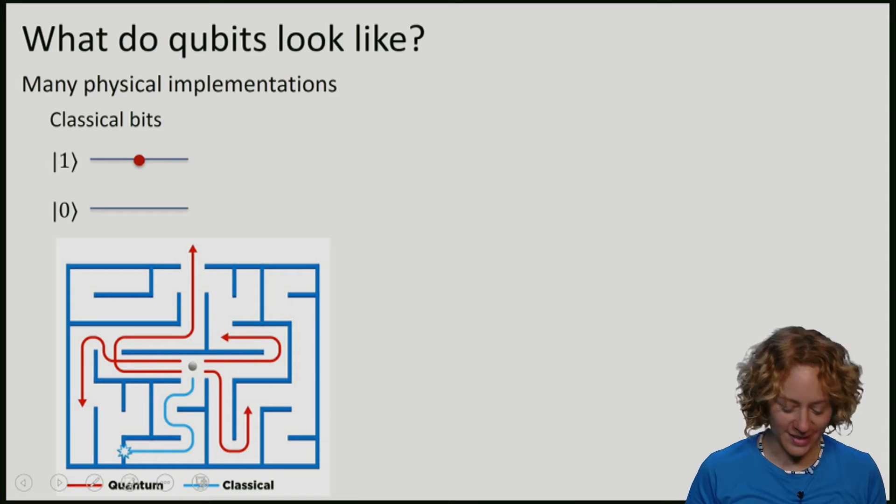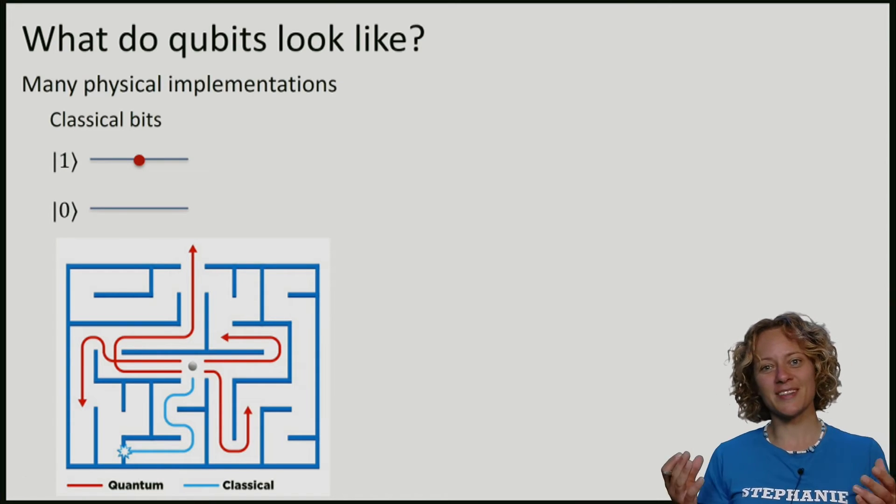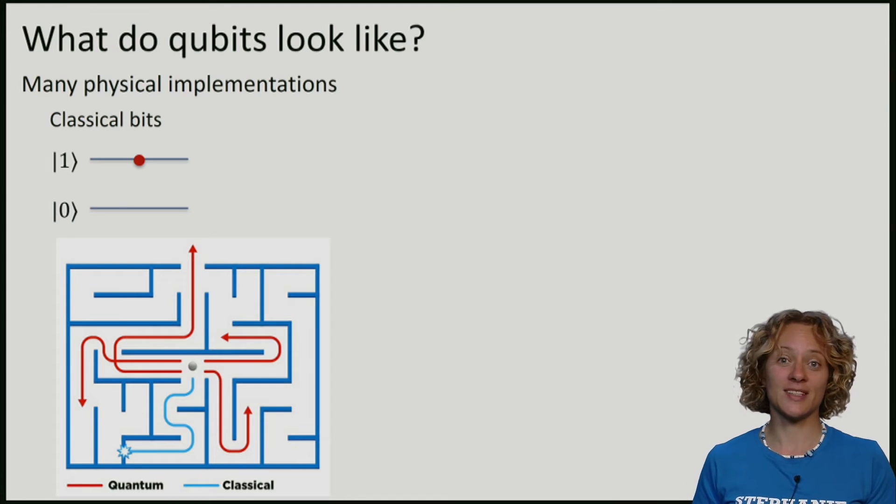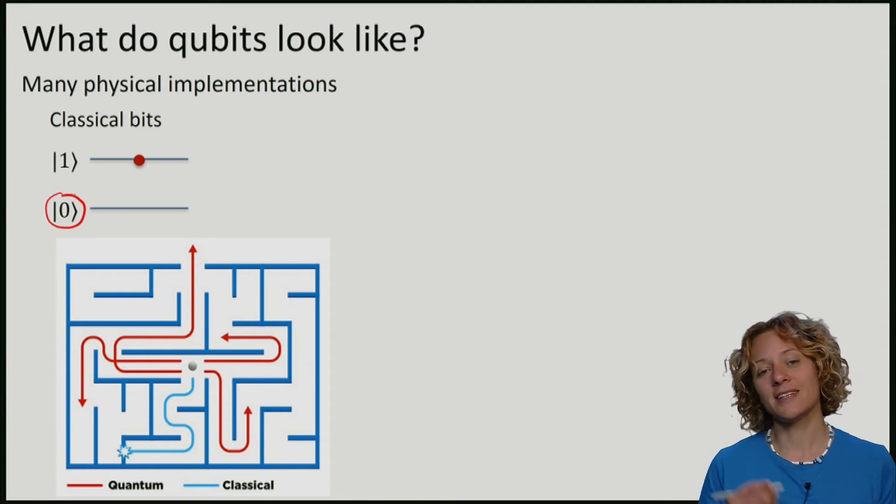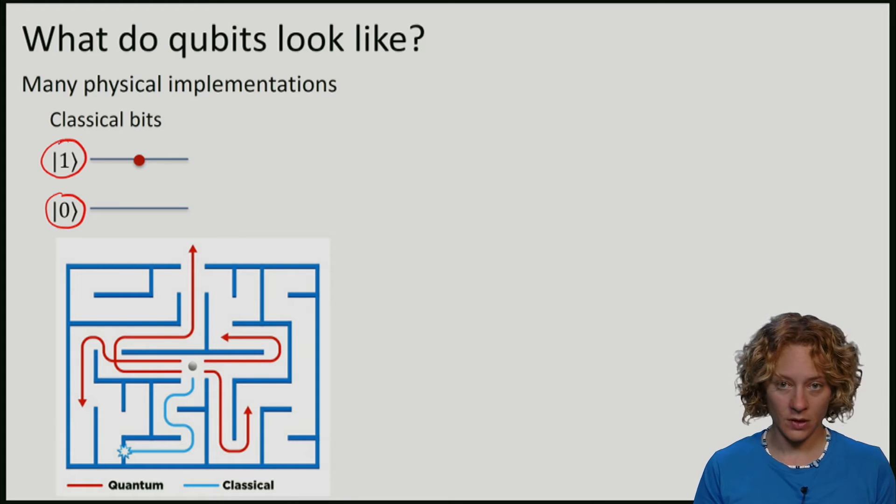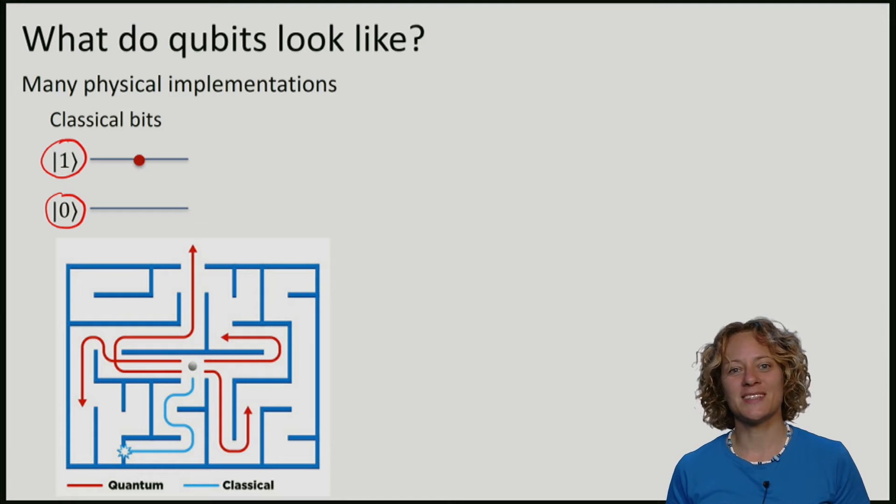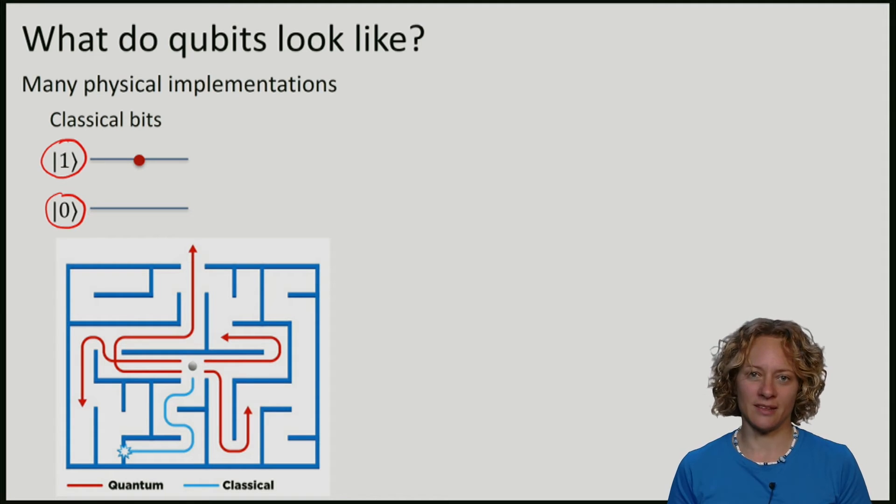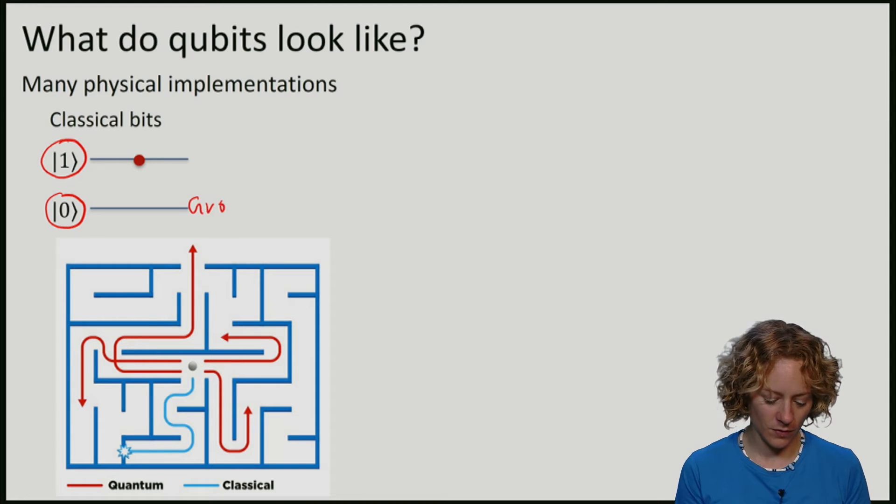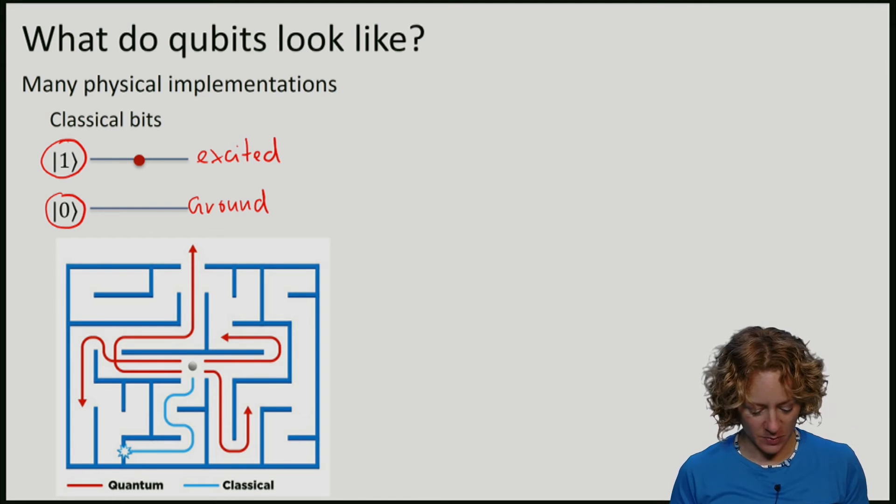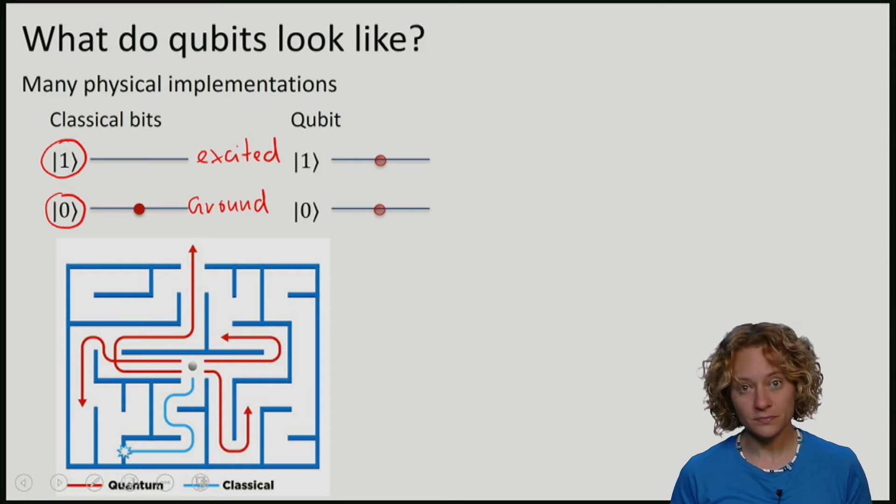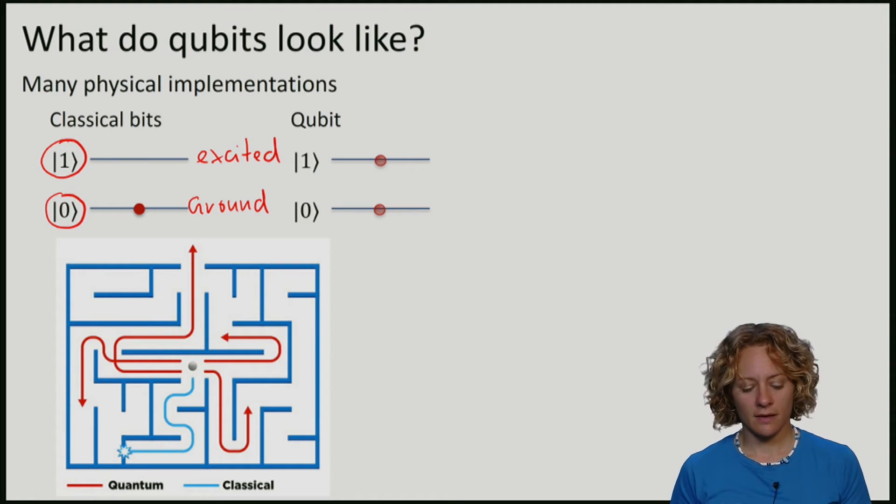Another example is a physical implementation in which we represent bits by energy levels in an atom. We can say that the ground state, or the lower one, is called zero and the higher one is called one. A classical bit means that my systems will be in one of these two states, so either in the ground state or in the excited state. A qubit can be in a superposition between zero and one. That is effectively in the ground and the excited state at the same time.